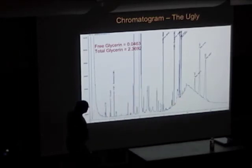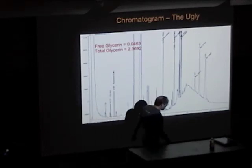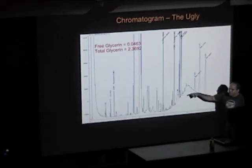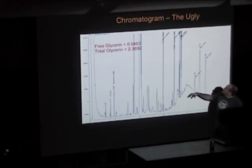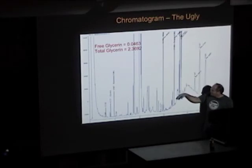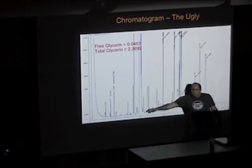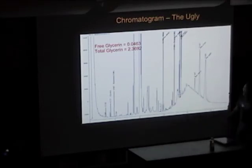So what happens when we're transesterifying is we're basically taking this stuff and pushing it that way. We're taking the tries, making the dies for a moment; taking the dies, making the monos; taking the monos, making the esters. That makes sense.